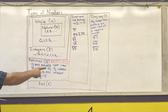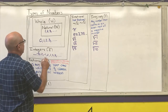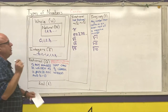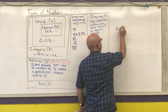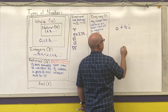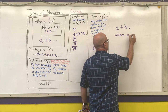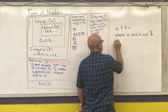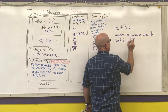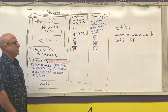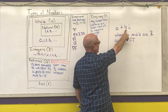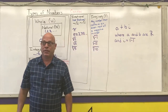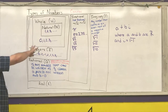This entire number system is called our complex number system. A complex number is any number that can be written as a plus bi, where a and b are real, and i is equal to the square root of negative one. If the b portion is zero, I have a purely real number. If the a portion is zero and b is not zero, then I have a purely imaginary number. So any number can be written as a complex number.